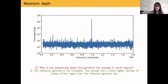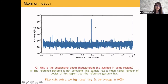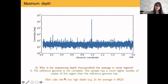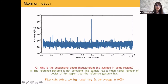For variant calling, you should filter calls with very high depth because the reference doesn't have those two sites and you cannot call correctly against it. Filtering by high coverage removes these artifacts where you're not aligning correctly because the reference is incomplete or non-representative.